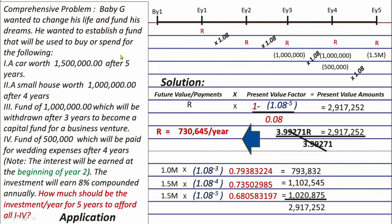In the previous episode, we talked about this comprehensive problem where Baby G wanted 1.5 million cash to buy a car at the end of year 5, a small house worth 1 million at the end of year 4, another 1 million at the end of year 3 to fund his business venture, and lastly 500,000 to fund his wedding expenses. To afford all of those, he needs to invest yearly at the end of each year.